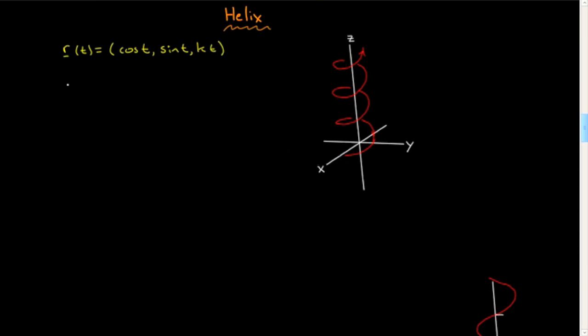So let's just do it. Let's compute the velocity, speed, etc. We can differentiate this very familiar: v(t) = (-sin t, cos t, k). The speed now is sine squared...